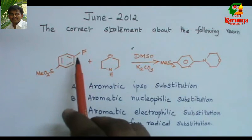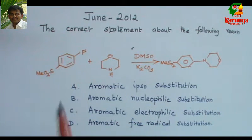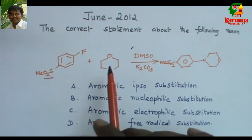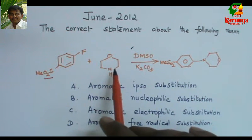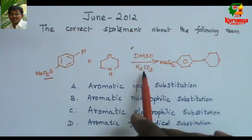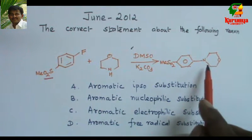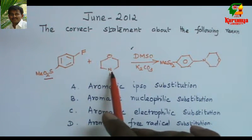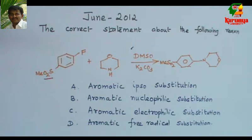This 4-fluorophenylmethyl sulfone, this functional group, it is sulfone, reacts with morpholine in DMSO, potassium carbonate, to give this substituted product. This fluorine has been displaced with this morpholine to give this product. And then given 4 statements about this reaction.